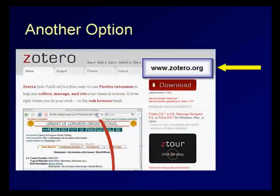Another free option for citation management, if you use Firefox as your web browser, is a program called Zotero. You can download Zotero for free and use it to capture, store, and display citation information. Neither system is perfect, so you need to know the basics to make sure the citations are properly formatted.